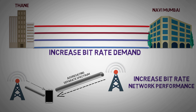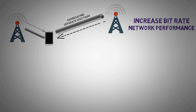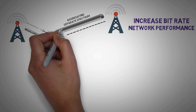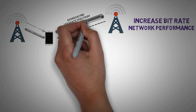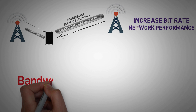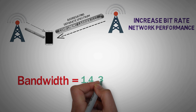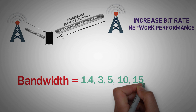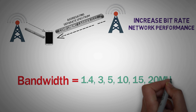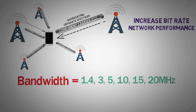Bandwidth is increased by aggregating separate spectrums, thus increasing the bit rate and network performance. Each aggregated carrier is referred to as a component carrier or CC. The component carrier can have a bandwidth of 1.4, 3, 5, 10, 15, or 20 MHz. And as per 3GPP, a maximum of 5 component carriers can be aggregated.